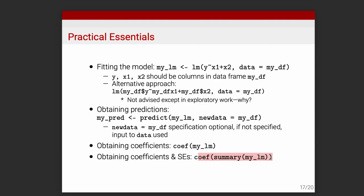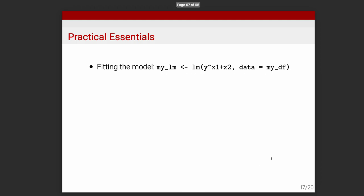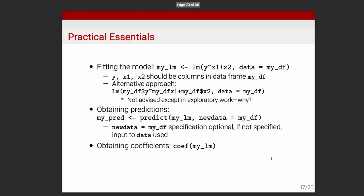lm stands for linear model. In a later statistics course you'll use glm — generalized linear model — where generalized means your outcomes can be binary or categorical, allowing for a whole variety of outcome types.